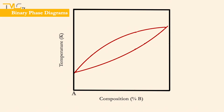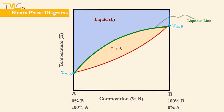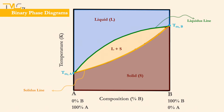But first, let's get familiar with the binary phase diagrams. The pure components are placed at the far ends of the composition axis. Conventionally, the composition axis represents the composition of the substance at the right end, having 0% on the left end and 100% on the right end. The points cutting the temperature axis at the left and right sides show the melting points of components A and B respectively. The curve separating the liquid phase and the liquid-solid phase mixture is called the liquidus line, and the curve separating the liquid-solid phase mixture and the solid phase is called the solidus line. Below the solidus line, we obtain a solid solution of A and B components, which are phases usually labeled with Greek letters.